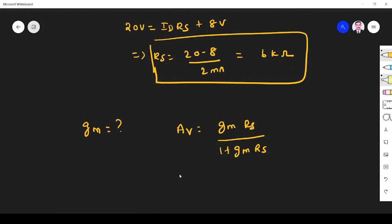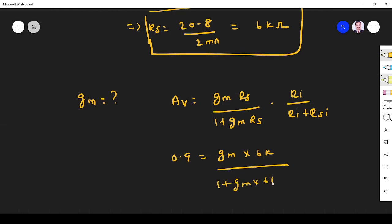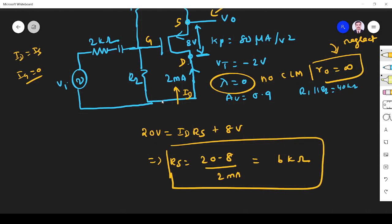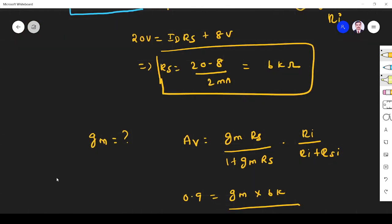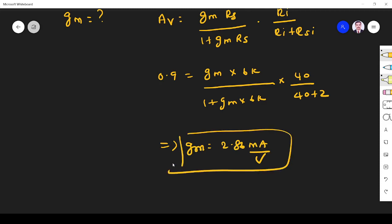So AV they are given, what is AV value? AV is 0.9. Then gm, just now RS we found, RS is 6k. So into RI divided by RI plus RSI. gm into 6k divided by 1 plus gm into 6k. What is RI? This is RI. RI is R1 parallel R2, so this is RI and this is RSI. So RI is 40k, RS is 2k, 40 divided by 40 plus 2. So if you simplify, gm is 5.86 mA per volt.